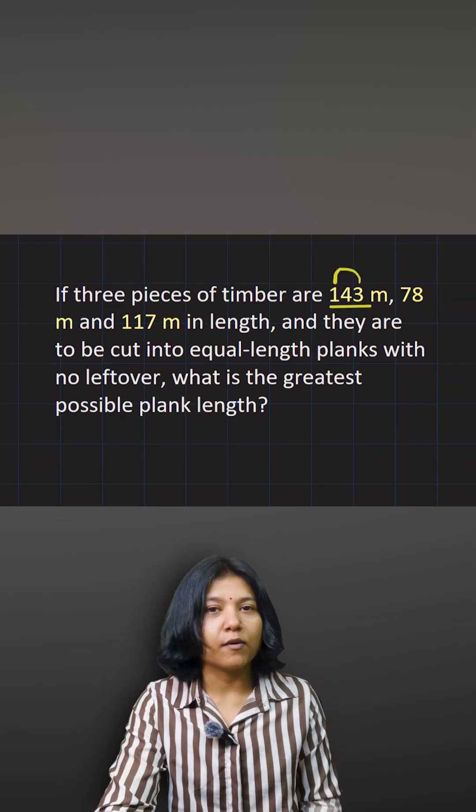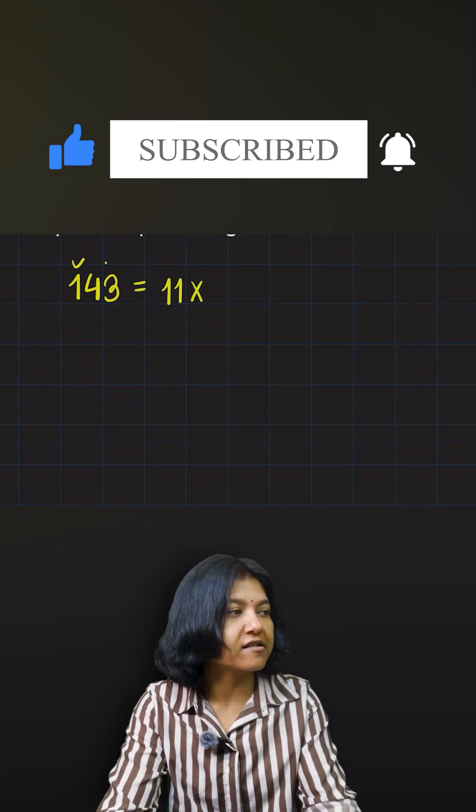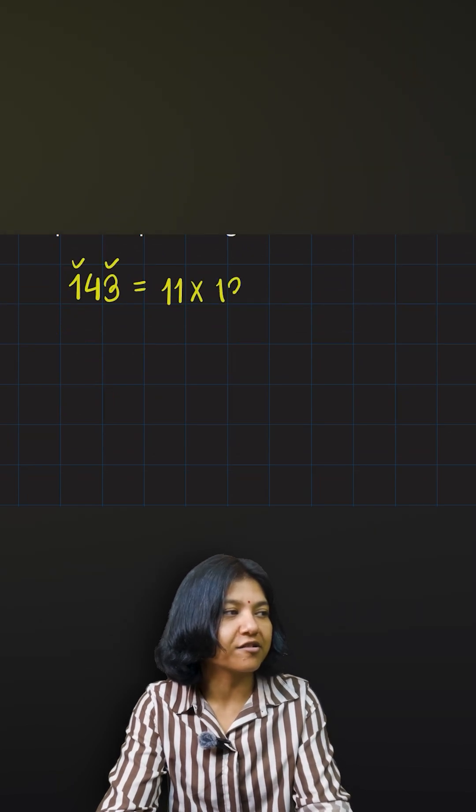143 is equal to 11 times how much? It's very easy because 11 times 1 is just 11. The first digit and the last digit, these are the two answers actually, so 143 equals 11 times 13. This is a shortcut.